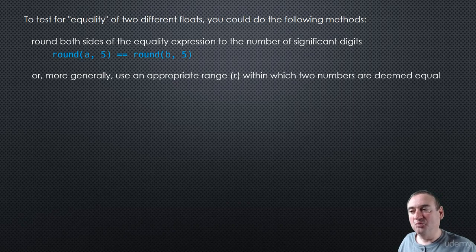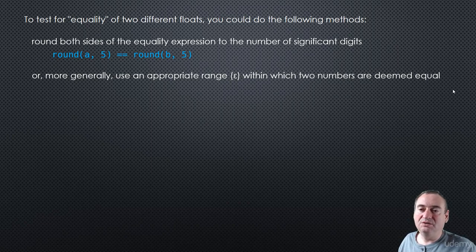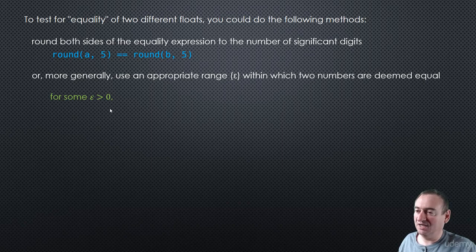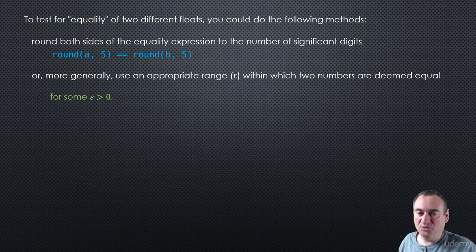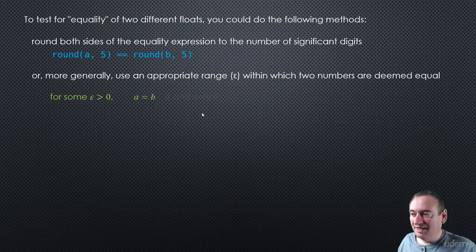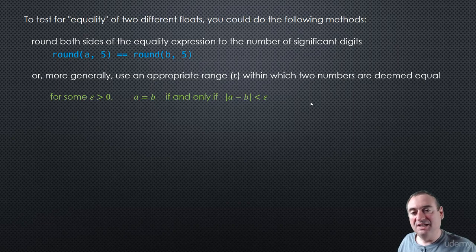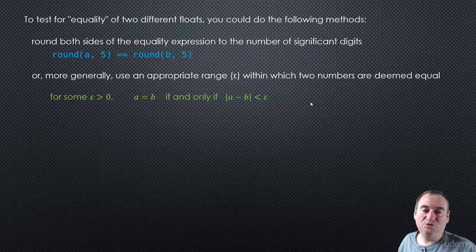More generally, we could use an appropriate range — let's say some value called epsilon — within which two numbers are considered or deemed to be equal to each other. Formally, the definition would be: for some epsilon greater than zero — your choice, you can pick it as small as you want, like 0.0001 if you want numbers to be within 0.0001 of each other — then a will be equal to b if and only if the absolute value of the distance between a and b is less than this epsilon value you specified.